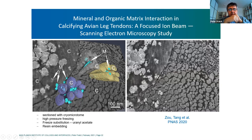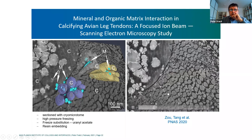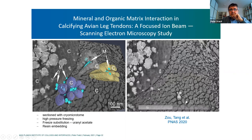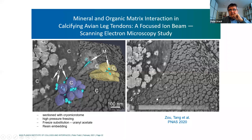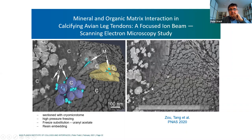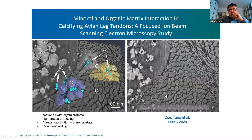This FIB-SEM image shows collagen fibrils with mineral entering them — the bright spots are all mineral. The point is that fibrils are by no means necessarily fully mineralized; many of them are only half-filled with mineral, demonstrating a lot of heterogeneity in this tissue.